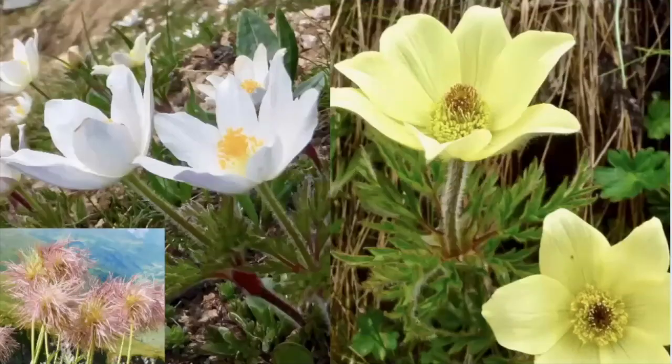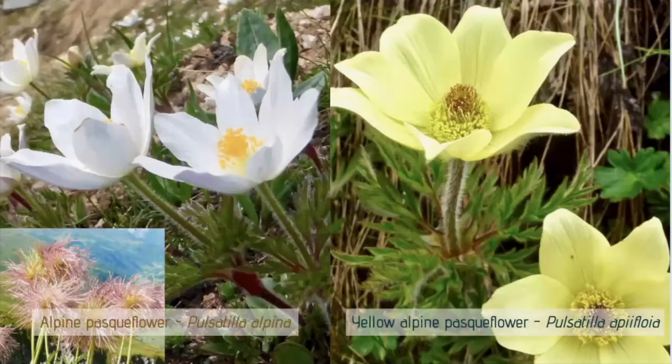Finally, two pasque flowers: on the left, the alpine pasque flower is a calcium-loving calcicol species. On the right, the yellow alpine pasque flower is a calcifuge, sometimes considered a subspecies of the alpine pasque flower, but again its distribution is limited and restricted by the underlying geology.